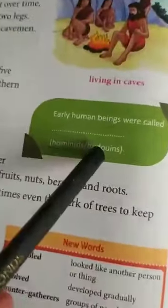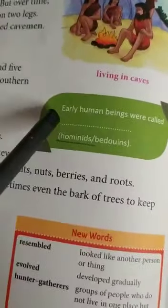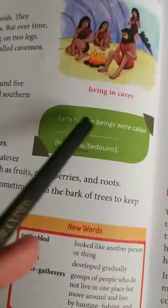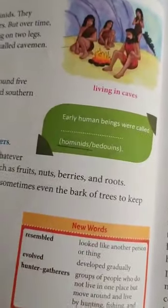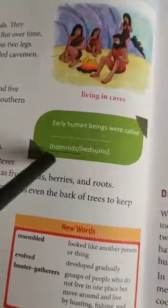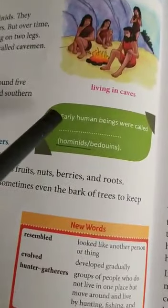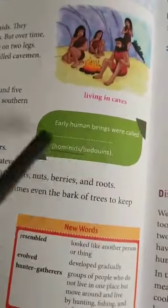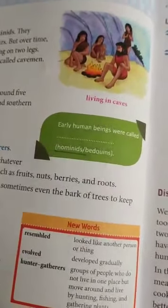Before starting the exercise, we are going to do the green boxes. First: early human beings were called blank. Early human beings ko hominids bhi kaha jata tha. Early human beings were called hominids.